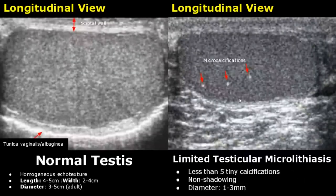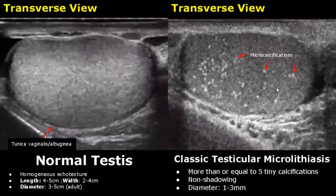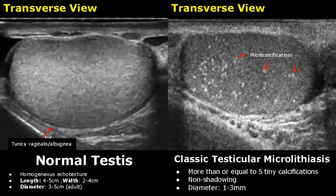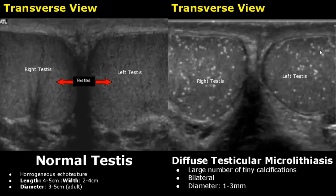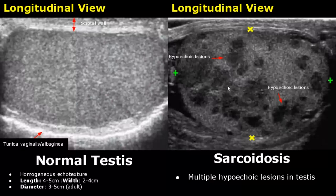Limited testicular microlithiasis consists of tiny calcifications inside the testis that are less than 5 in number, measuring 1 to 3 mm in diameter without any shadowing. Classic testicular microlithiasis will have 5 or more tiny calcifications. In diffuse testicular microlithiasis you can see a large number of tiny calcifications in both the right and left testis. In testicular sarcoidosis the testis contains multiple hypoechoic structures spread throughout the organ.